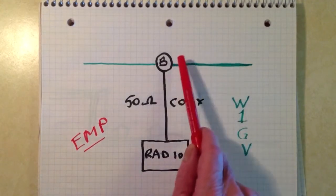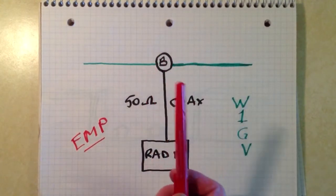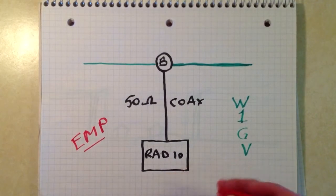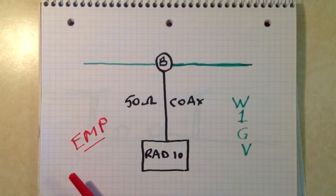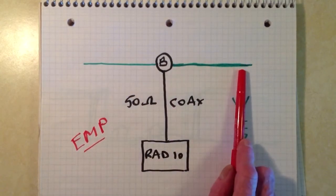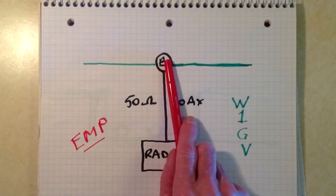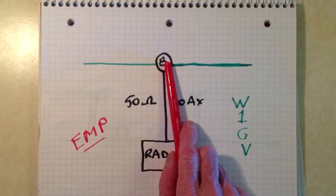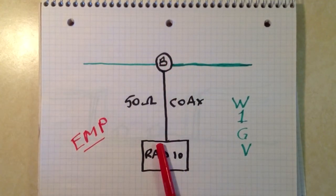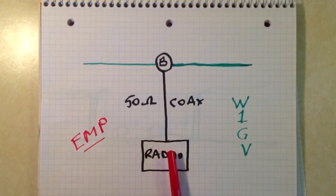However, should there be a nearby lightning strike, it doesn't have to be directly on your antenna. You don't have to suffer a direct hit. If it's within a few hundred feet and it's sufficiently powerful, it will introduce a current surge, a spike, in this antenna, which can get through a Balun transformer and down through your coax and into your radio and very easily fry your radio.